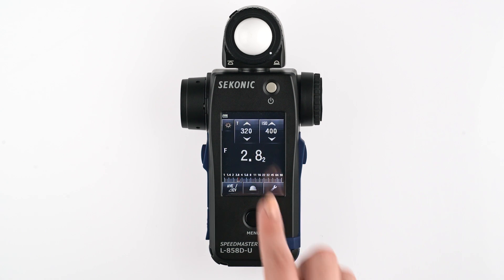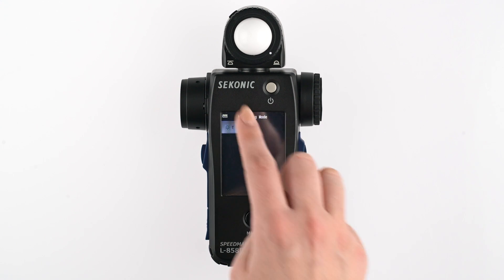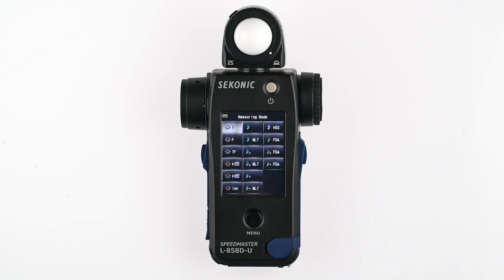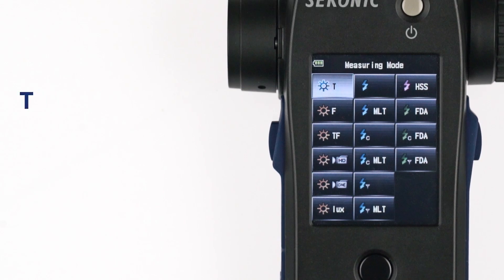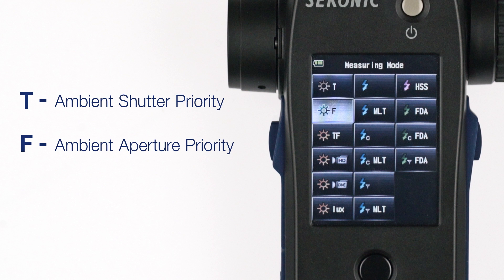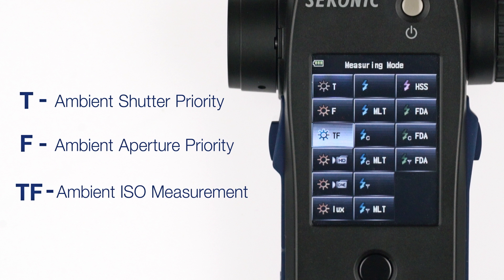Let's start by reviewing the ambient measuring modes. T is for ambient shutter priority, F is for ambient aperture priority, and TF is for ambient ISO measurement in which shutter and aperture are locked.